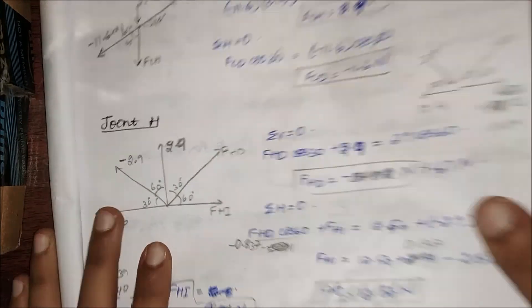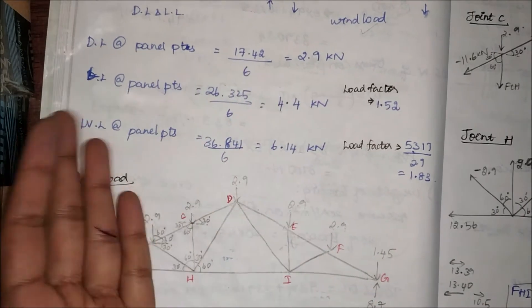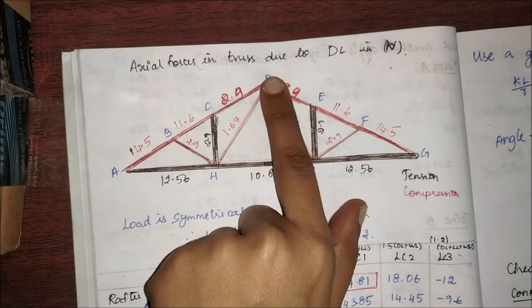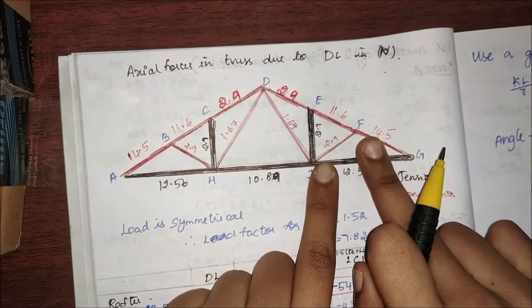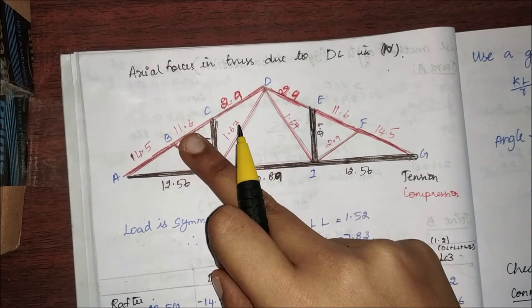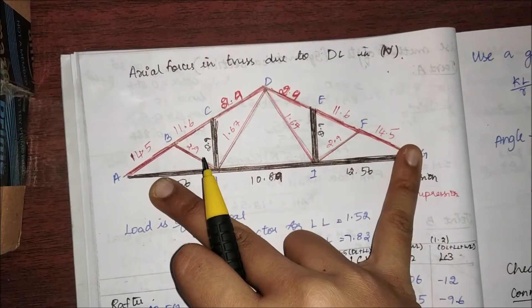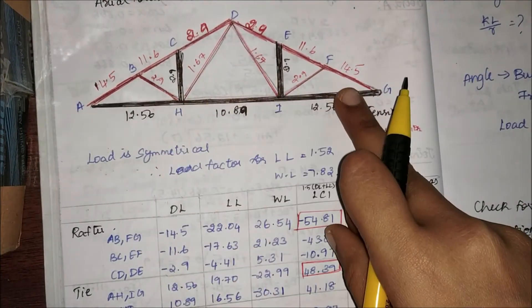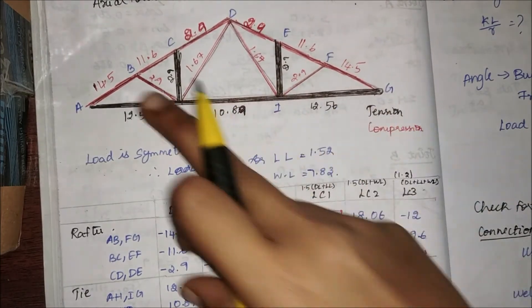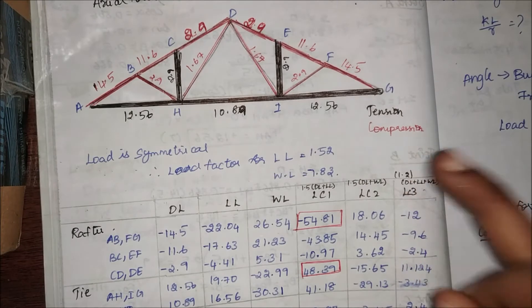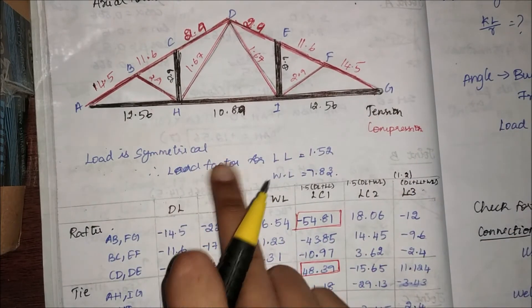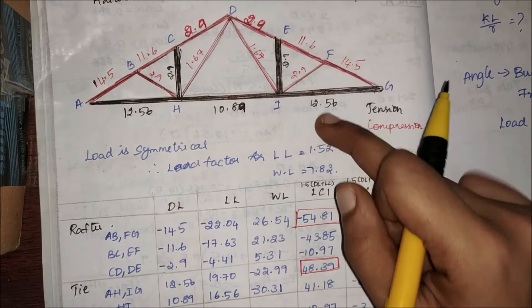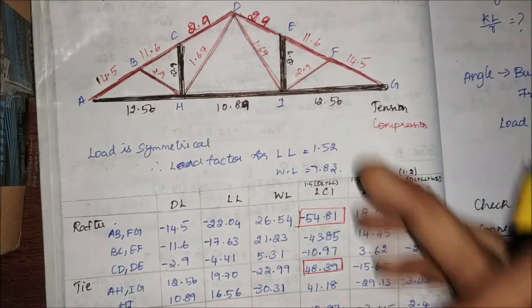Since it is a symmetrical truss, all the forces on this side will be equal to that of the other side. So if this is 2.0 here, it will be 2.0 there. Similarly 11.6 = 11.6, 14.5 = 14.5. The black color items are the tension members — all the ties are in tension and the vertical members are in tension — and all the red color items are in compression. Since the load is symmetrical, I can just multiply the load factor for live load and wind load to get the axial forces for those conditions.